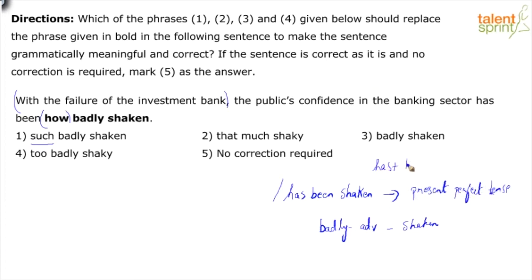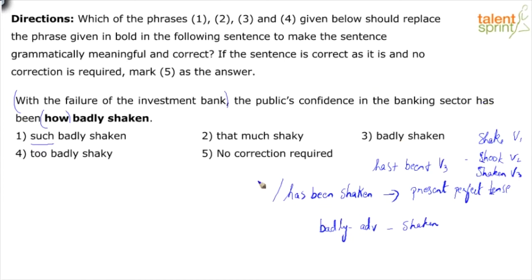Has plus been plus verb 3. Shake: verb 1, shook: verb 2, shaken: verb 3. For perfect tense we only need verb 3. Having said that, when in a context with this particular sentence structure, I don't need 'how' in between — it doesn't make sense. So obviously the existing highlighted phrase is incorrect.